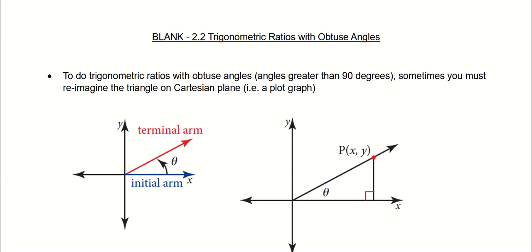Hey there. So in this lesson, we'll be talking about trigonometric ratios with obtuse angles. Now, what are obtuse angles? Well, in short, obtuse angles are angles that are greater than 90 degrees.